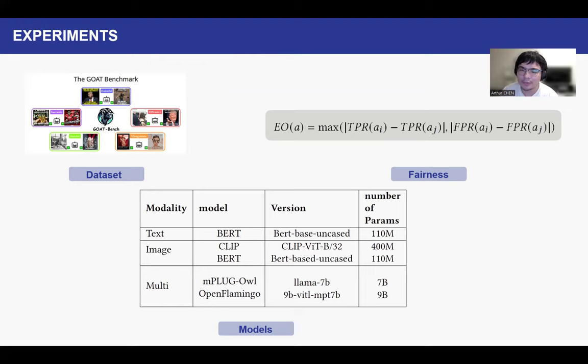For the fairness system metrics, we are using equalized odds, which covers both the sensitivity of the outcomes but also the balancing errors, trying to control the balancing errors of the outcomes across the different attributes.